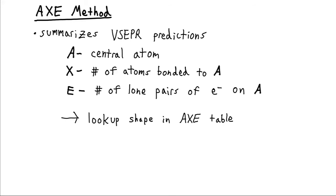So the Axe method represents the significant features of our structure. A stands for the central atom. X stands for the number of atoms which are bonded to that atom. And E stands for the number of lone pair electrons on that atom. And once we know these numbers, we can just look them up in our chart.